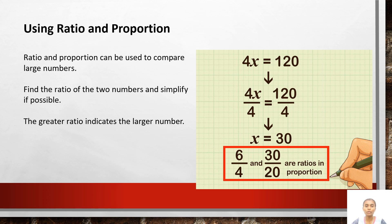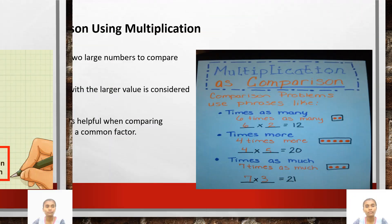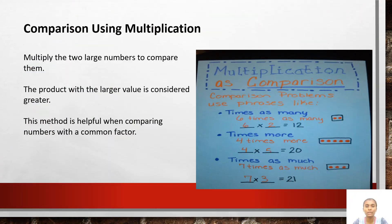Using ratio and proportion: a ratio and proportion can be used to compare large numbers. Find the ratio of the two numbers and simplify if possible. The greater ratio indicates the larger number. Comparison using multiplication: multiply the two large numbers to compare them. The product with the larger value is considered greater. This method is helpful when comparing numbers with a common factor.